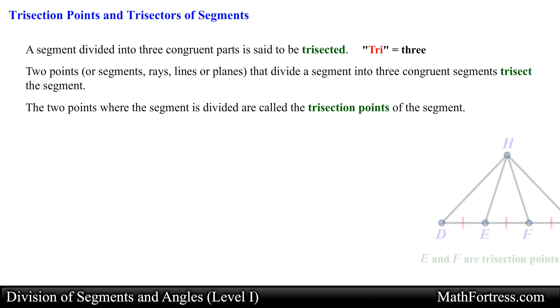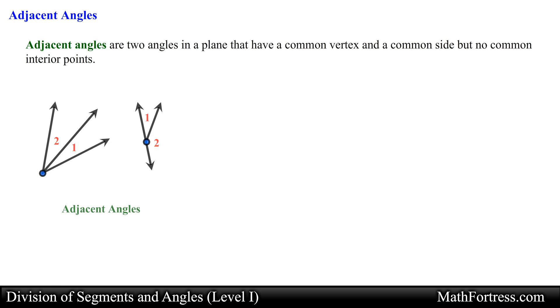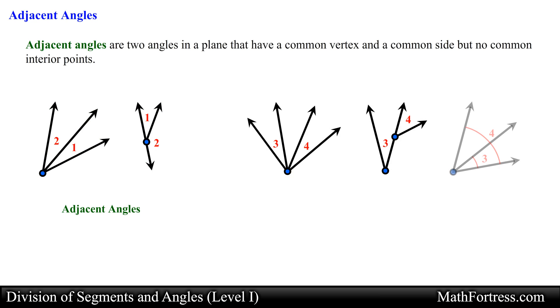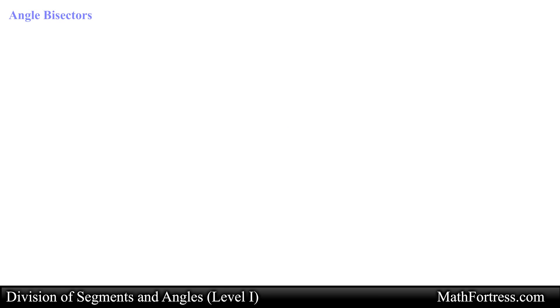Before we talk about angle bisectors, let's quickly talk about adjacent angles. Adjacent angles are two angles in a plane that have a common vertex and a common side but no common interior points. For example, in the diagram shown, angle 1 and angle 2 are adjacent angles. The next diagrams illustrate examples of non-adjacent angles — notice that angle 3 and angle 4 are not adjacent angles.